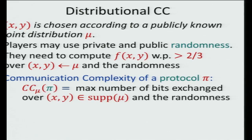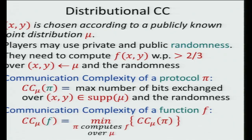We can define the communication complexity of a protocol pi under distribution mu as the maximum number of bits that the players need to exchange over all possible inputs and over the randomness — the worst-case length of the protocol. Once we have this, we can define the communication complexity of a function f to be the communication complexity of the best protocol that computes this function over our distribution.